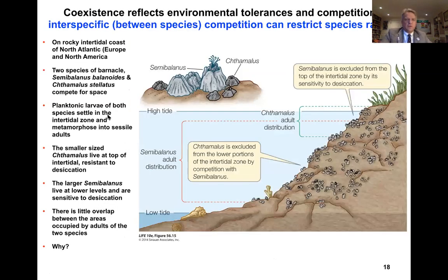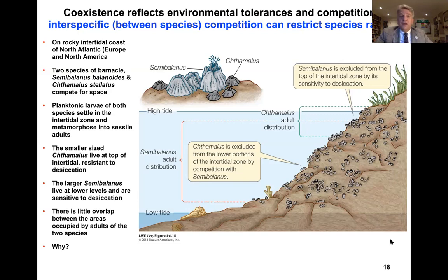This brings us to a famous experiment that illustrates the difference between the fundamental and realized niche — competition restricting species ranges. On the rocky intertidal coast of the North Atlantic — Europe and North America — there are two species of barnacle: Semibalanus and Chthamalus. They compete for space. Planktonic larvae of both species settle in the intertidal zone and metamorphose to sessile adults, so their larvae are distributed throughout the intertidal zone, but the adults settle and become sessile.